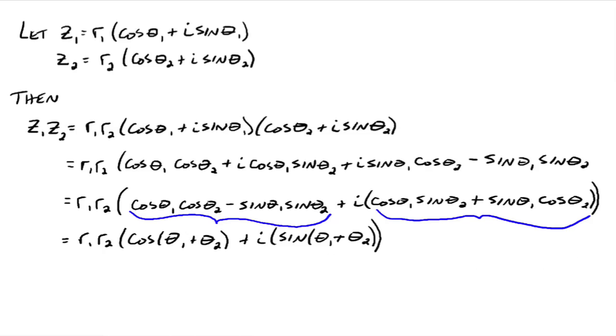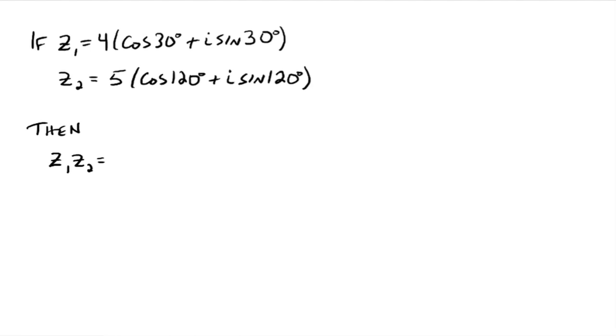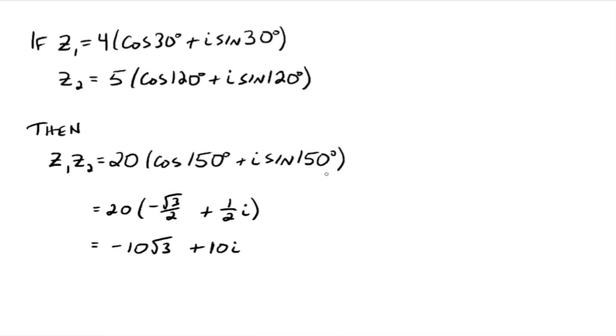For example, z1 times z2 goes to 4 times 5, which gives you 20. The cosine of 30 degrees plus 120 degrees, that's where this 150 degrees is coming from. And then the sine of 150 degrees. And then when you figure out the cosine of 150 degrees goes to the negative square root of 3 over 2, the sine of 150 degrees goes to 1 half, and you've just multiplied these two complex numbers together to get negative 10 radical 3 plus 10i. So it can make multiplying complex numbers together kind of easy.